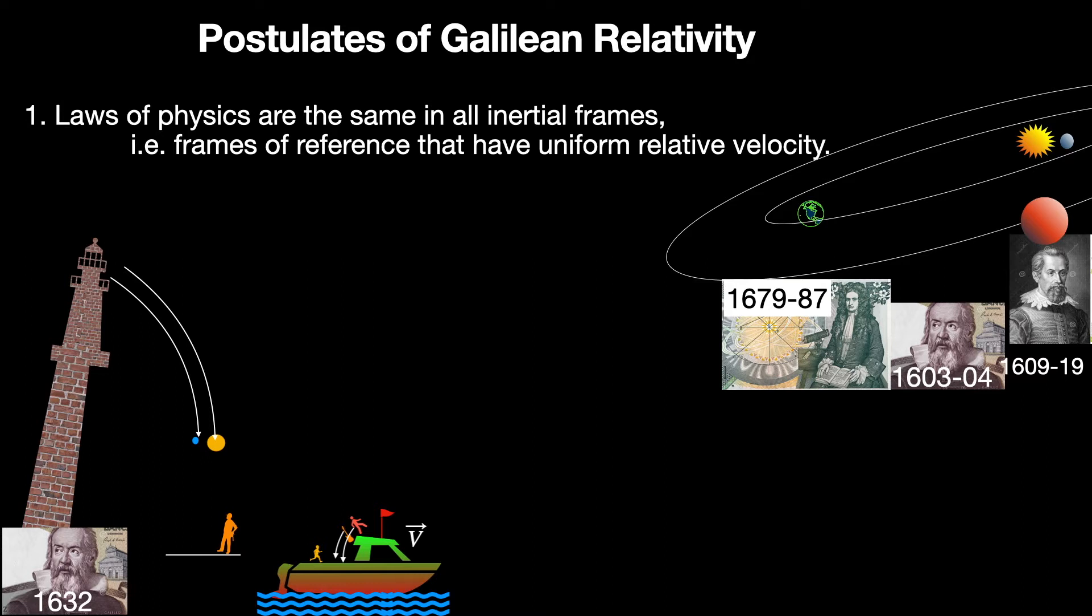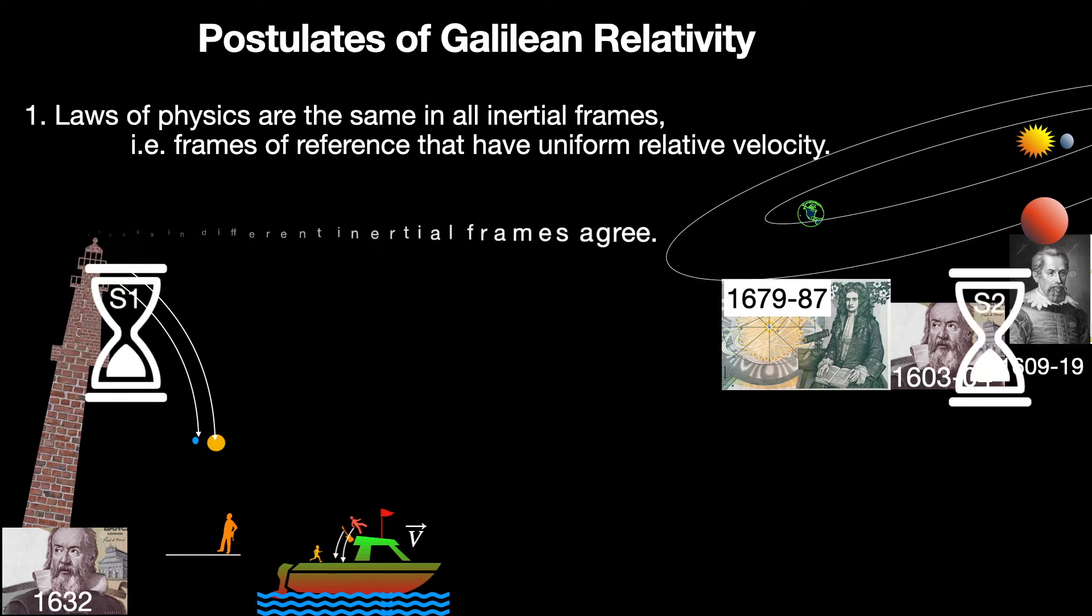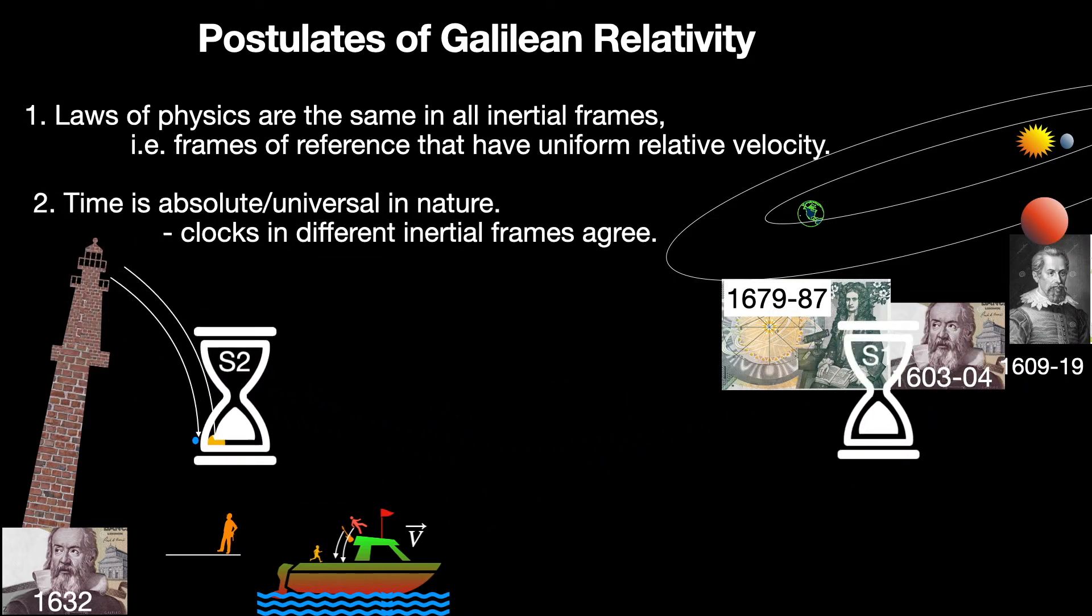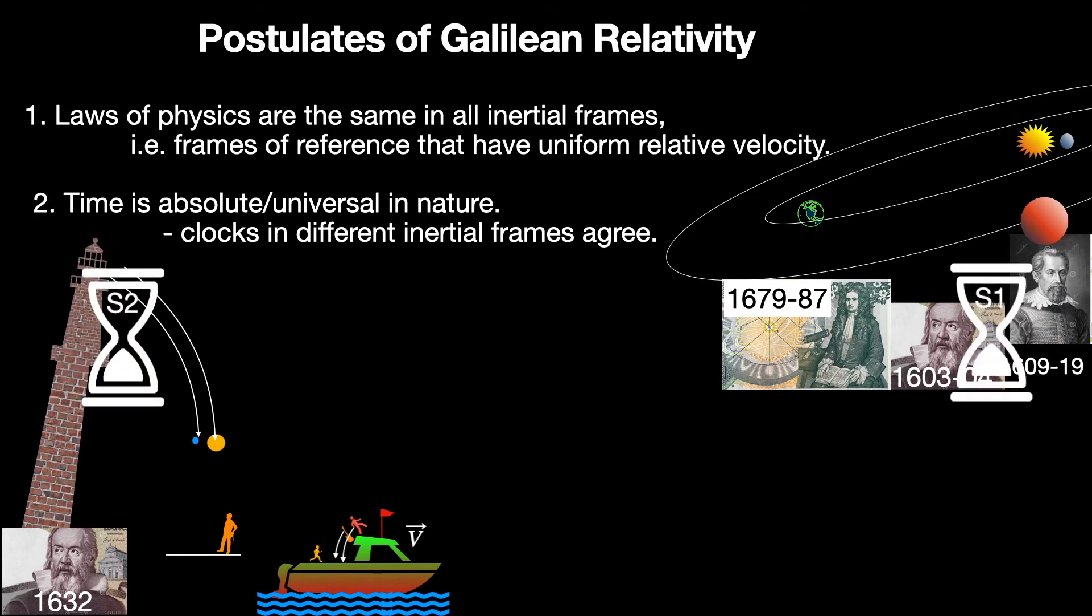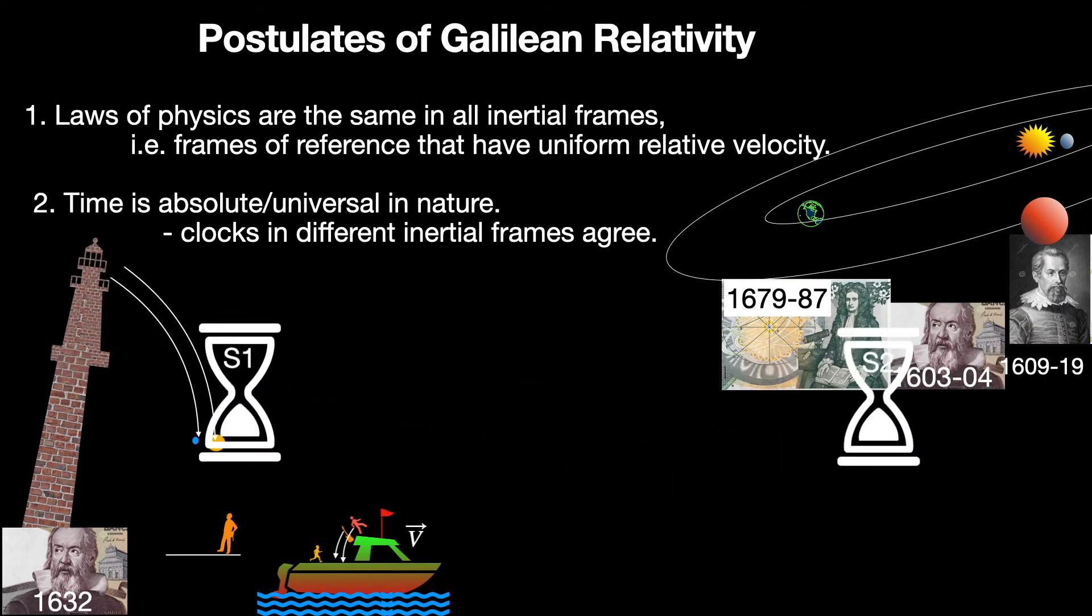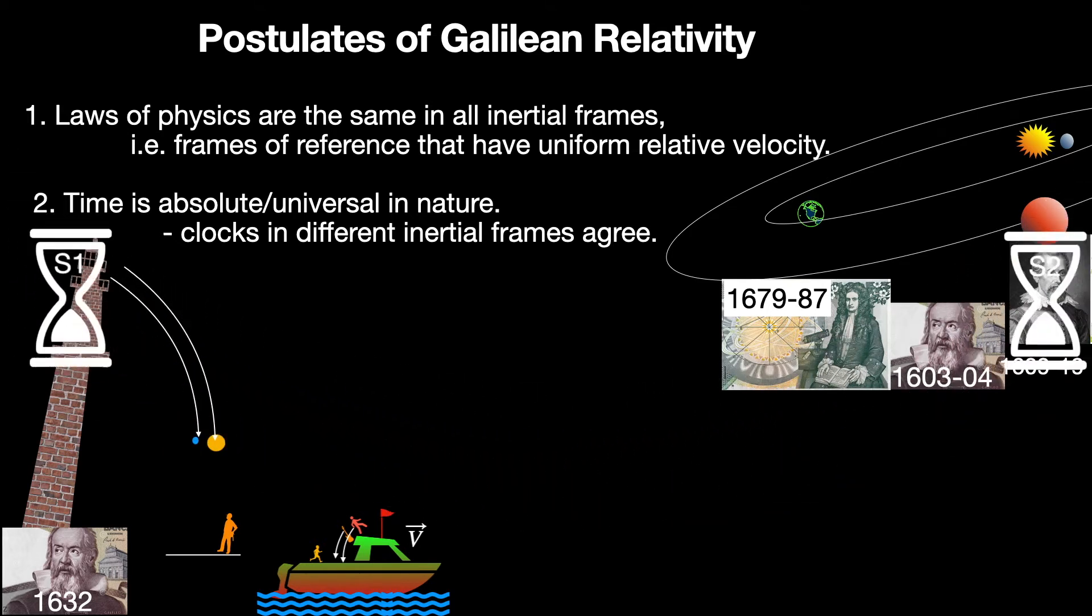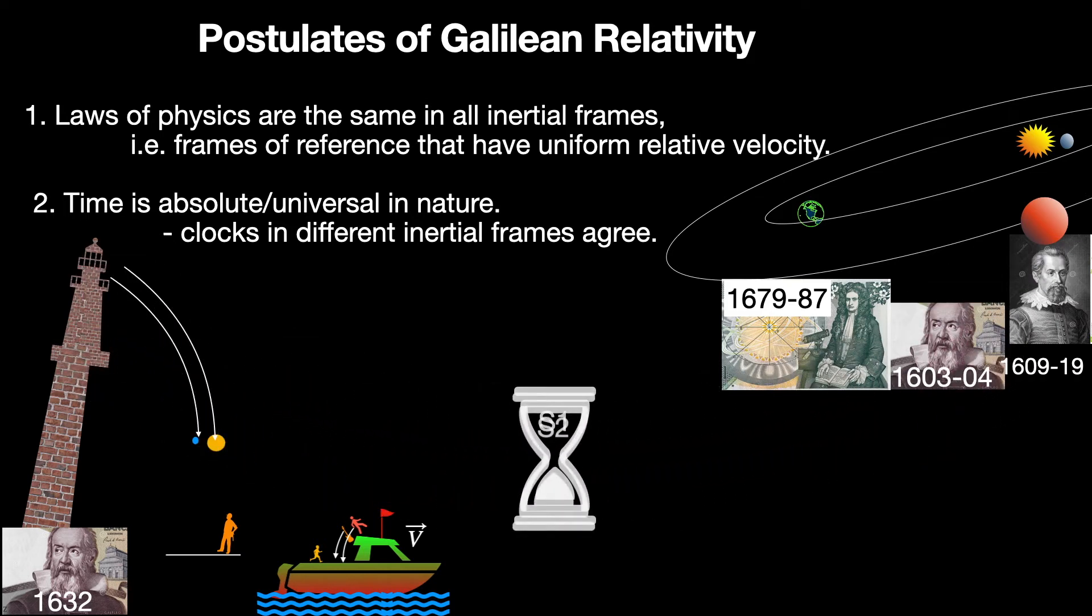Now there was another postulate or you may say a hidden assumption in Galilean relativity, one so obvious that it was not spelled out as a postulate. This is the assumption of absolute time. Its original conceptualization actually dates back to the time of Aristotle around 2000 years before Galileo. We discussed this concept of absolute time and Galilean relativity and what they mean in mathematical terms in details in a previous video.